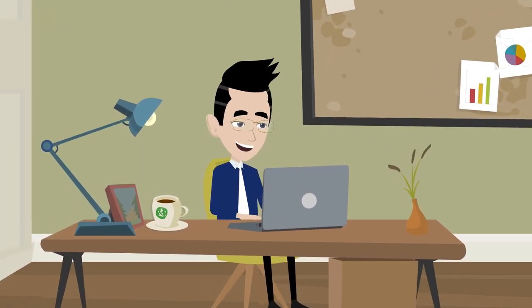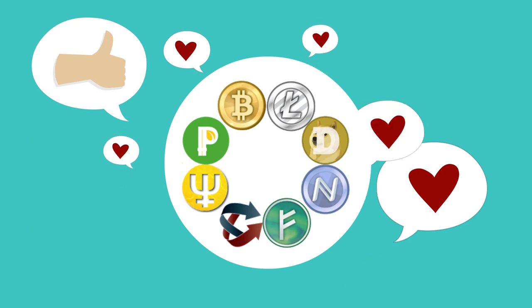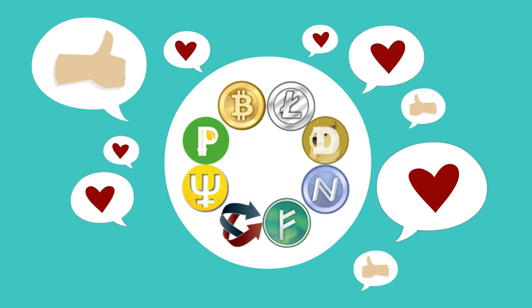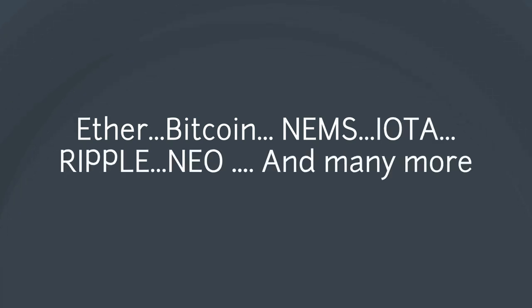No more problems during the conversion to fiat because Abchain is the very first advertising platform that accepts a total of 10 cryptocurrencies as payment medium for its service: Ether, Bitcoin, NEMS, IOTA, Ripple, NEO, and many more.